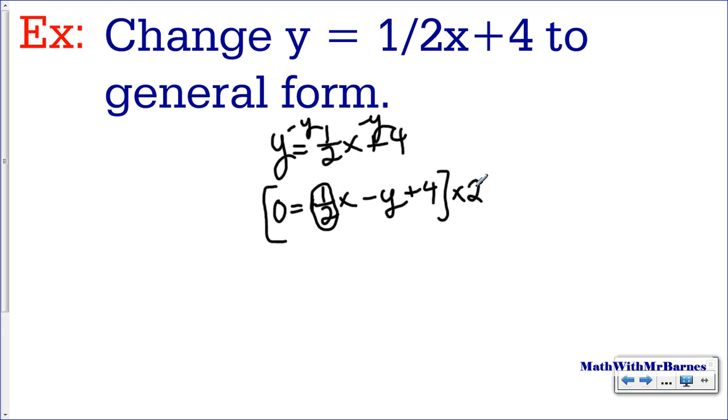1 half times 2 is just 1, so I end up with x. 2 times negative y is negative 2y. 2 times 4 is 8, and then we'll let that equal 0. There's my general form. So if you've got a fraction, multiply by what's in the denominator.